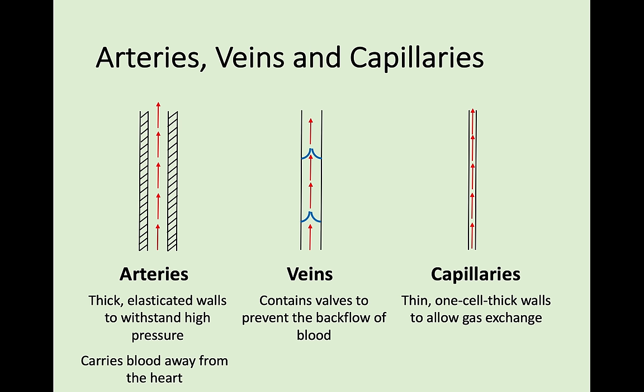Arteries carry blood away from the heart - arteries and away both have an A in them. So an artery carries blood away from the heart at very high pressure through thick elasticated walls. Veins, however, carry blood towards the heart at a lower pressure, and that's why they have their valves to prevent the backflow of blood. Capillaries have very low blood pressure, form networks around the muscles and tissues, and their one-cell thickness means oxygen and carbon dioxide can pass between them.